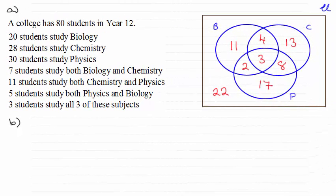Hi. Now for part B, we had to find the probability that a student studies chemistry but not biology or physics. In other words, they study chemistry only. So I'm just going to write that as chemistry only.